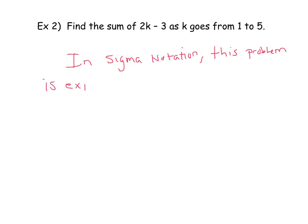There's my sigma sign, 2k minus 3 is my rule, k is going from 1 to 5. It says find the sum, so let's actually find the sum.